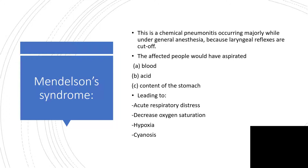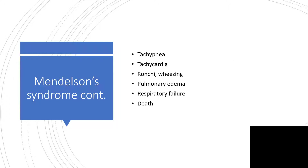There will be decreased oxygen saturation, hypoxia, cyanosis, and tachypnea. Tachycardia, ronchi, wheezing, pulmonary edema, respiratory failure, and death. So for Mendelson's syndrome, when someone is under general anesthesia and the cough reflex is cut off, there is a possibility of aspiration.